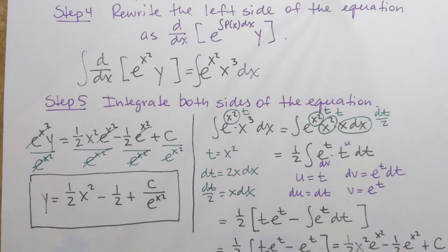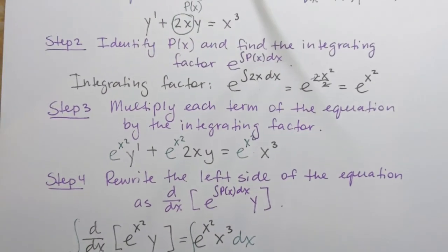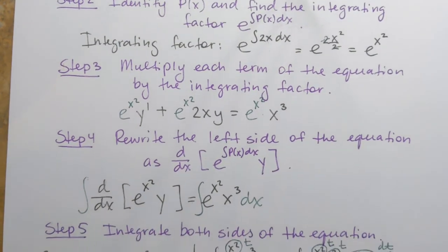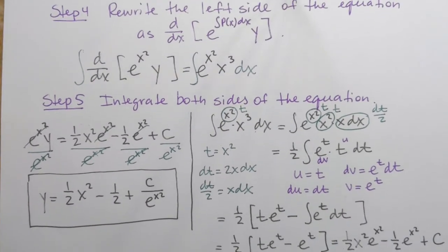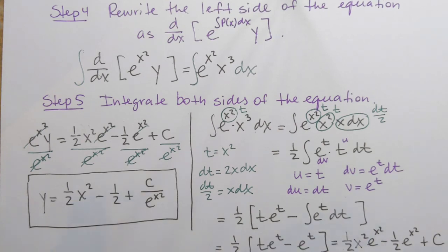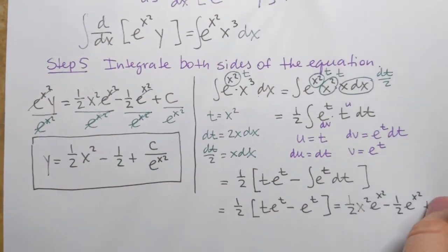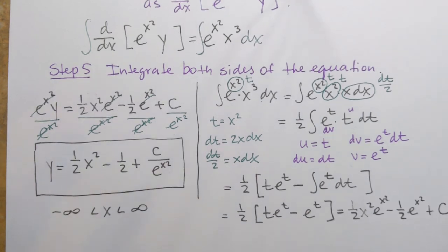We also had to state an interval on which the general solution is defined. Along the way we didn't encounter any restrictions on domains or functions, so there are no restrictions. The interval on which this general solution is defined is all real numbers, which we can write as x between negative infinity and positive infinity.